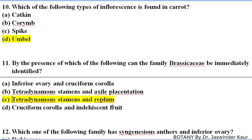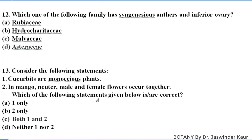Which of the following families has syngenesious anthers and inferior ovary? Syngenesious anthers are an anther condition in which the stamens are fused at the anthers, forming a tube-like structure around the style. Syngenesious anthers together with inferior ovary are both characteristic of family Asteraceae.